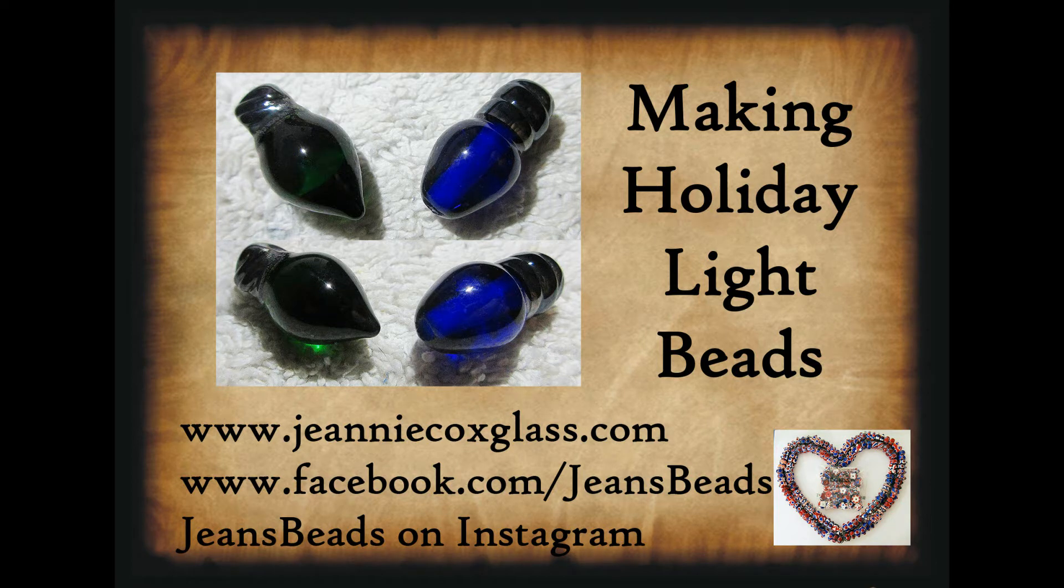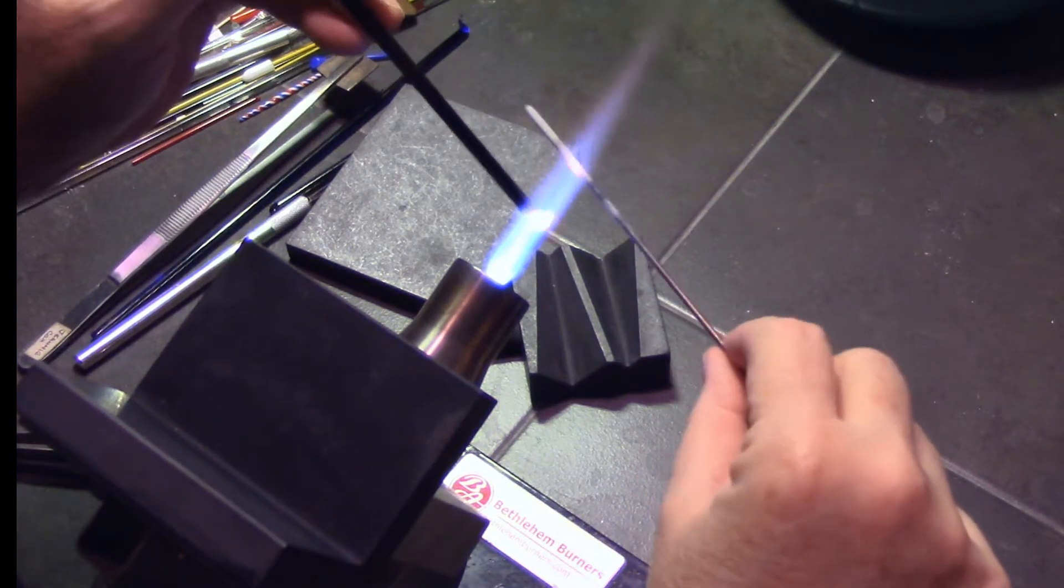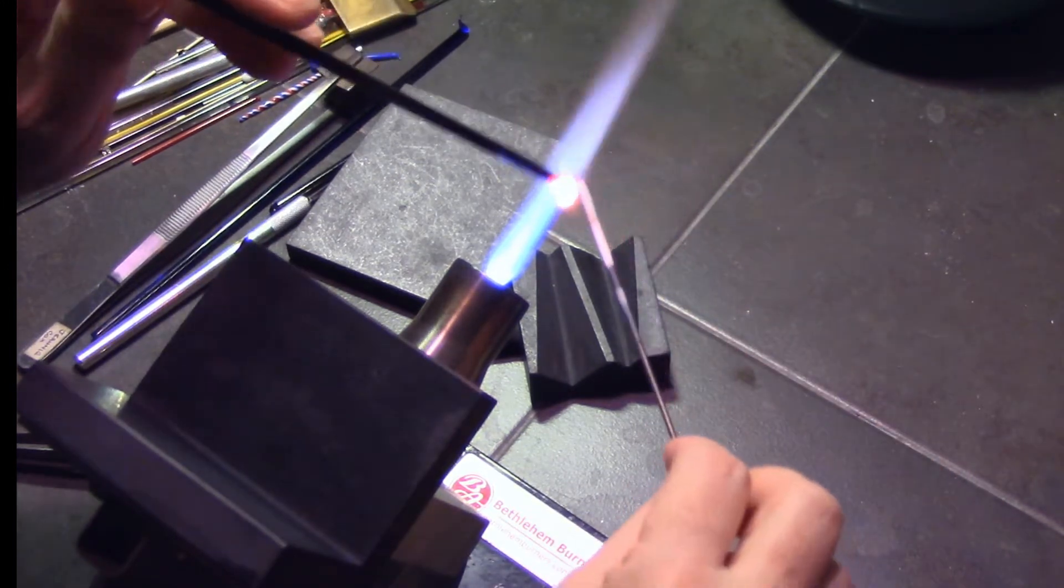Hi everybody, today I'm going to show how to make Christmas light beads or holiday light beads out of soft glass. This one is for Veronica who requested this video, so I hope you enjoy. I'm going to make these in two different ways: vertically along a mandrel and then horizontally hanging down from a mandrel.